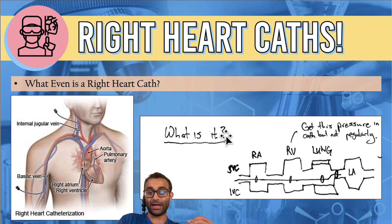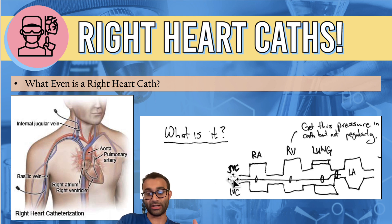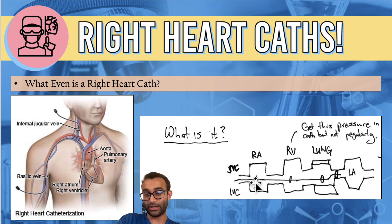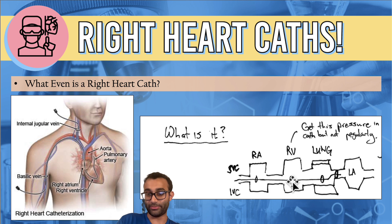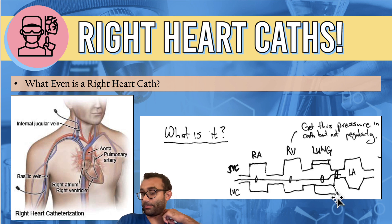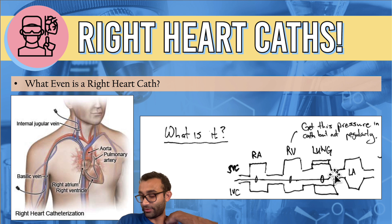You get a catheter from either the superior or inferior vena cava. It then goes into your right atrium. From the right atrium, it goes through the tricuspid valve into your right ventricle. And then from the right ventricle, it goes into the lungs. And then from the lungs, it can often go into the left atrium.